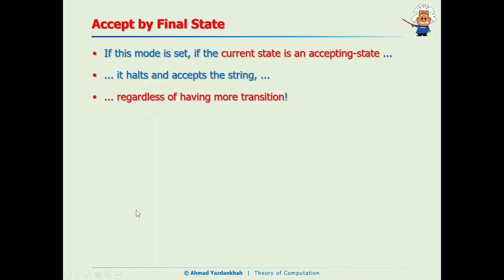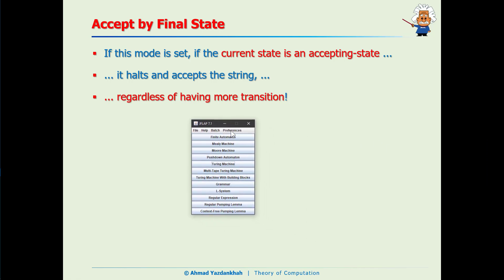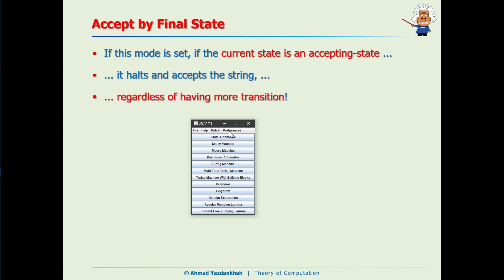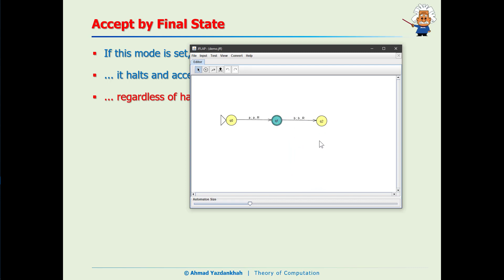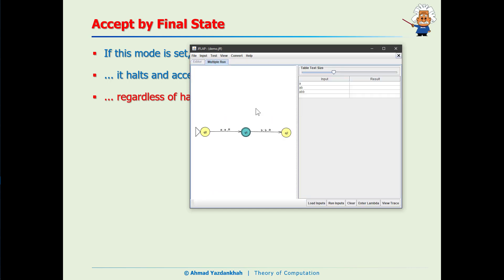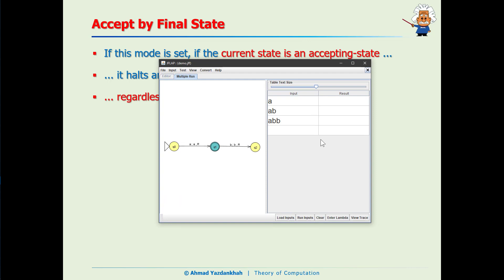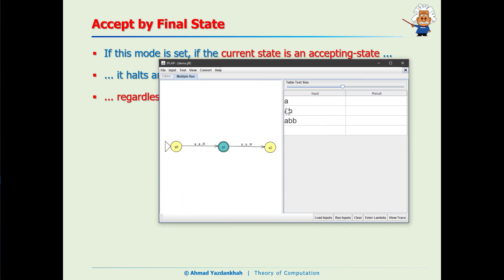The next mode is accept by final state. In this mode, if the machine passes through an accepting state, it halts and accepts the string regardless of having more transitions after that. Let me demo this — first we make sure the Turing machine is set to accept by final state. I'll load the previous machine and make q1 a final state. Based on this definition, we predict all inputs should be accepted, because for 'a' the machine definitely reaches q1 and gets accepted.